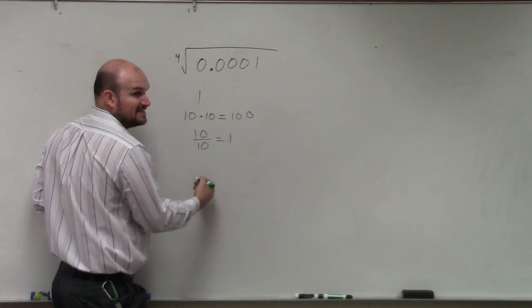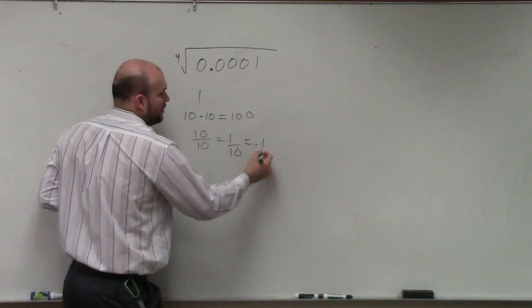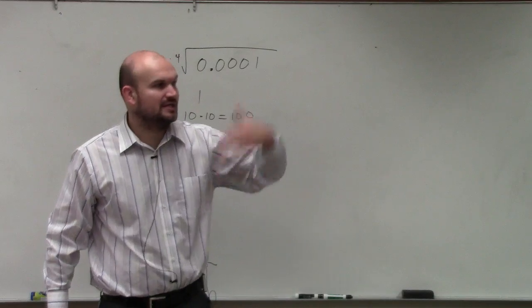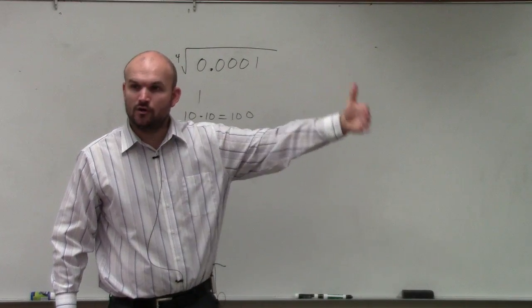And if you divided that by 10 again, that would equal 0.1 and so forth, right? So if you keep doing that operation, you're going to keep moving over a place value.